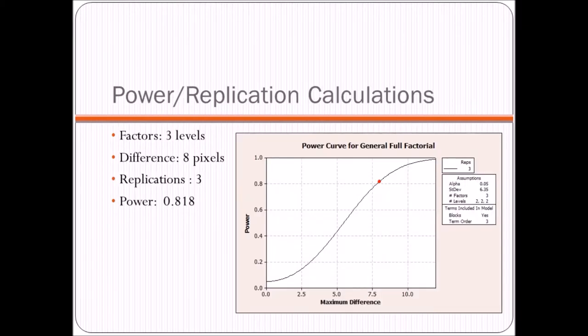So in order to determine if these three replications of the eight combinations was sufficient for our experiment, we got a calculation of the power off of Minitab. And the difference there is eight pixels, and that's essentially saying what we consider to be a difference. And that was sufficient based on what we were seeing from the pictures of the experiment. And that gave us a power of 0.81, which was enough to say that our experiment was valid.